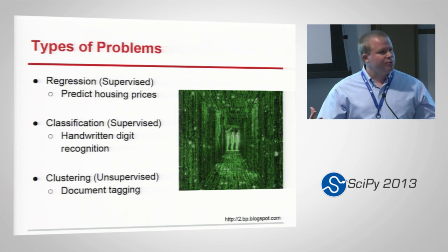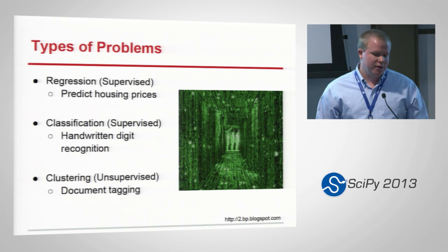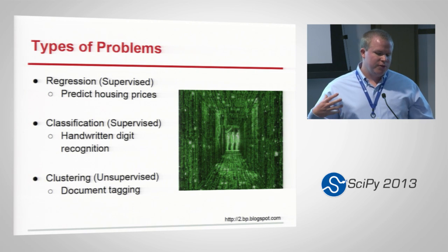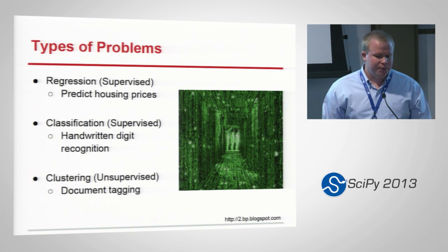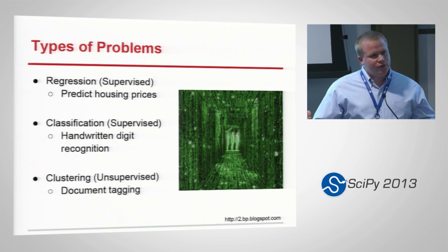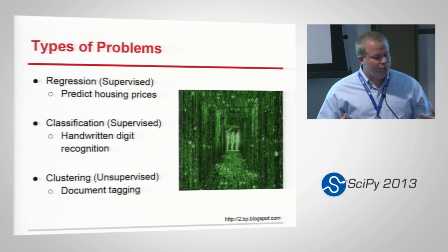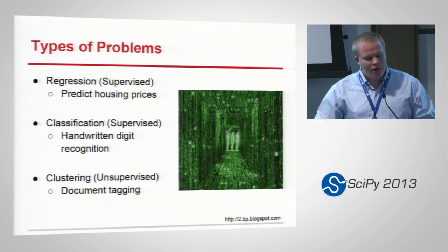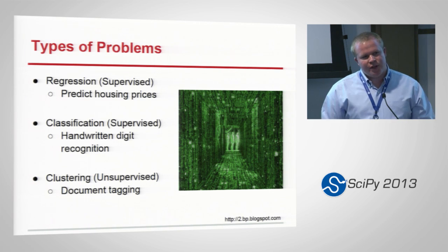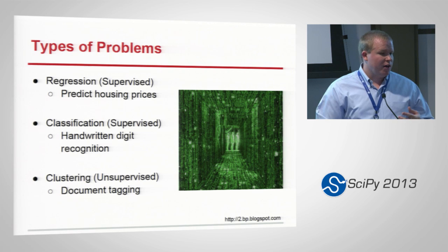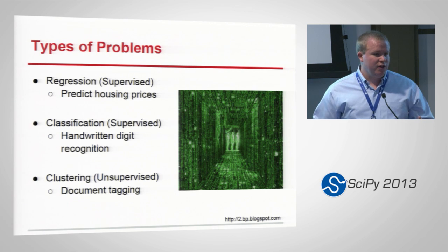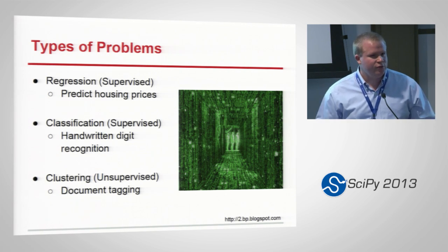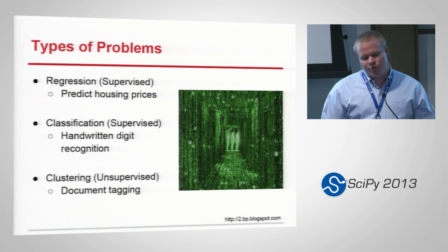A couple examples of types of problems we find in machine learning. Regression problems happen often. Basically, given some input — it could be multi-dimensional input — we want to predict some output. A great example of this is housing prices: given the size of a garage, given the size of a yard, given the niceness of the neighborhood, given how close it is to a school, how much do we think a house will cost?